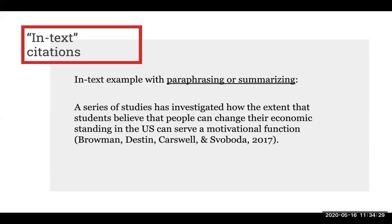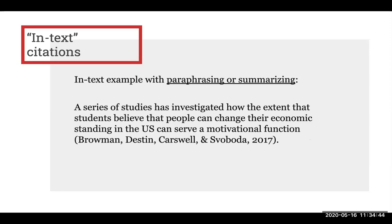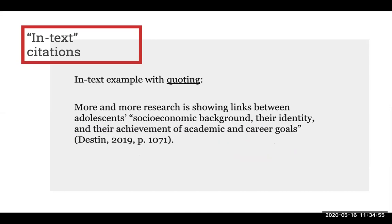Let's take a closer look at a few more examples. Here's an example of using paraphrasing or summarizing. This sentence — "a series of studies has investigated" and so on — is either a paraphrase or a summary. Therefore, the in-text citation includes the author's last names and the year, wrapped in parentheses. Here's an example of using quoting. This sentence has a direct quote that reads, "Socio-economic background, their identity, and their achievement of academic and career goals." Since this is a quote, the in-text citation includes the author's last name, the year, and the page number for where the exact quote came from.